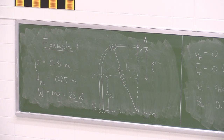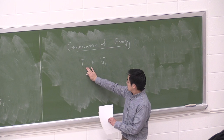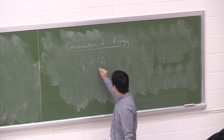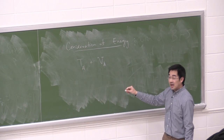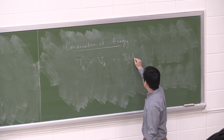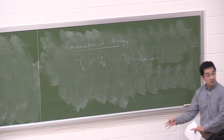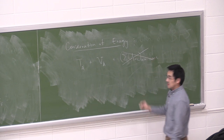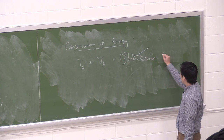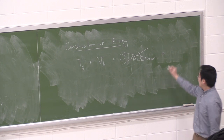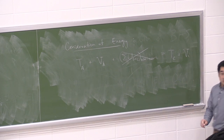The second method — conservation of energy — allows us to approach it from a different perspective. We can write TA plus VA plus the sum of work done from 1 to 2 of non-conservative forces equals TC plus VC. But since this problem is frictionless, all of that non-conservative work term is gone, making conservation of energy even more ideal. We're going from A to C.